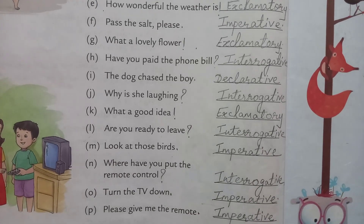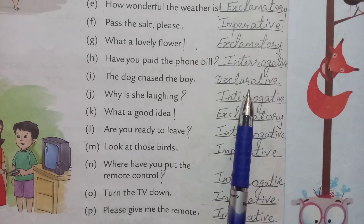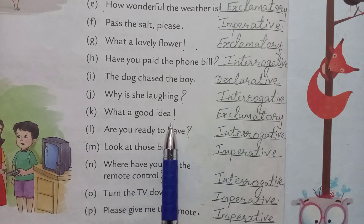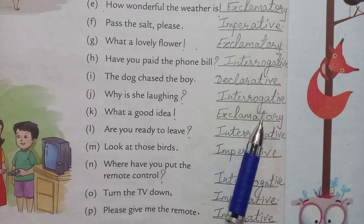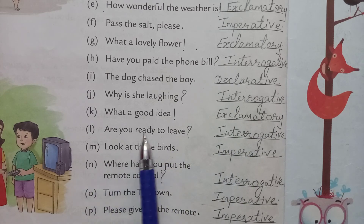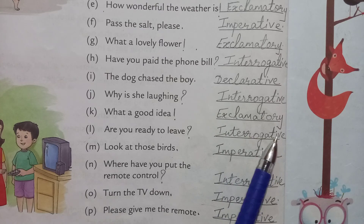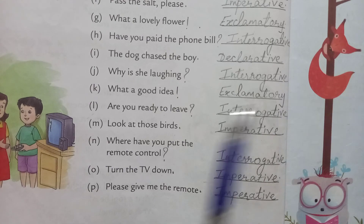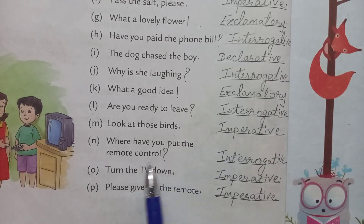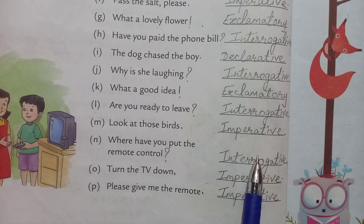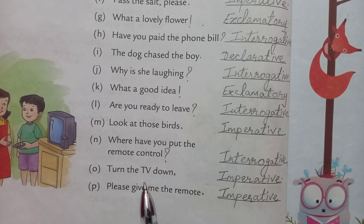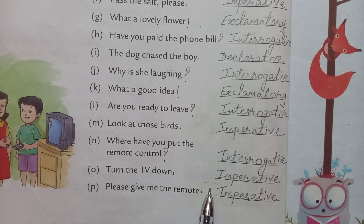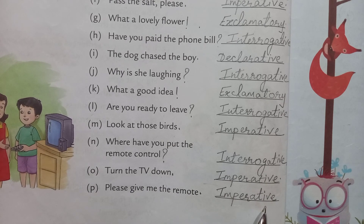'The dog chased the boy.' — declarative. 'Why is she laughing?' — interrogative. 'What a good idea!' — exclamatory. 'Are you ready to live?' — interrogative. 'Look at those birds.' — imperative. 'Where have you put the remote control?' — interrogative. 'Turn the TV down.' — imperative, it is an order. 'Please give me the remote.' — that is also an order, so imperative.